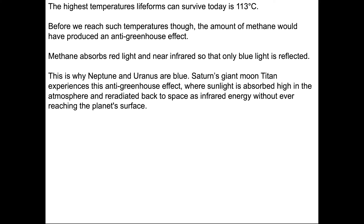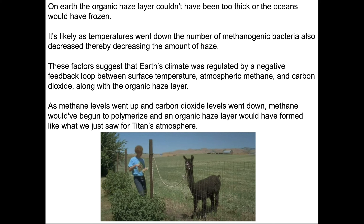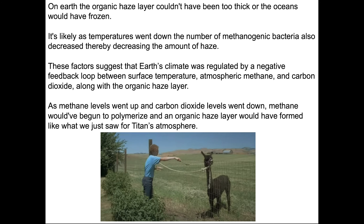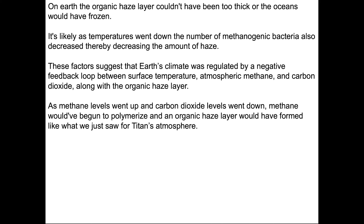On Earth, the organic haze layer couldn't have been too thick, or the oceans would have frozen. However, as temperatures went down, the number of methanogenic bacteria also decreased, thereby decreasing the amount of haze — the feeding frenzy comes to an end because hyperthermophiles don't reproduce or grow as fast in cold conditions. This suggests Earth's climate was regulated by a negative feedback loop between surface temperature, atmospheric methane, carbon dioxide, and the organic haze layer — exactly what we see happening in Titan today.